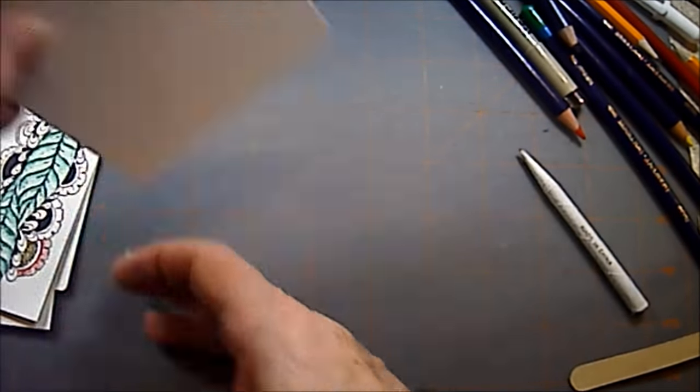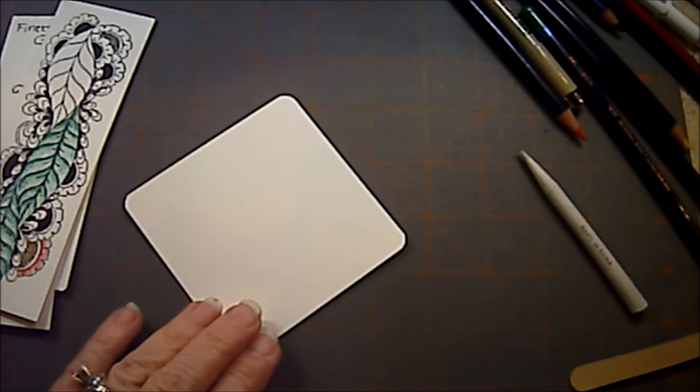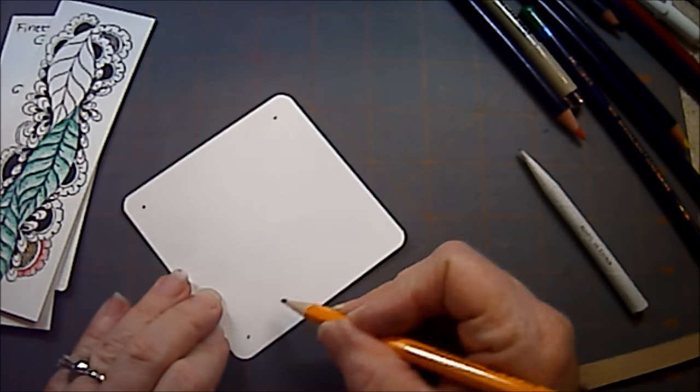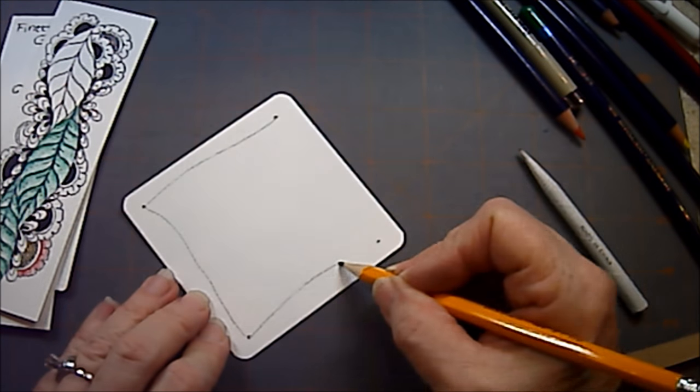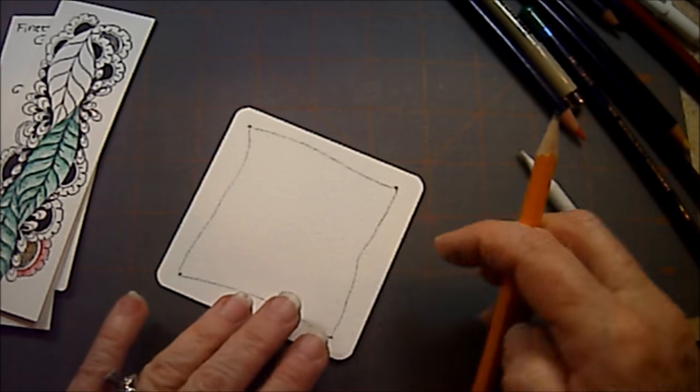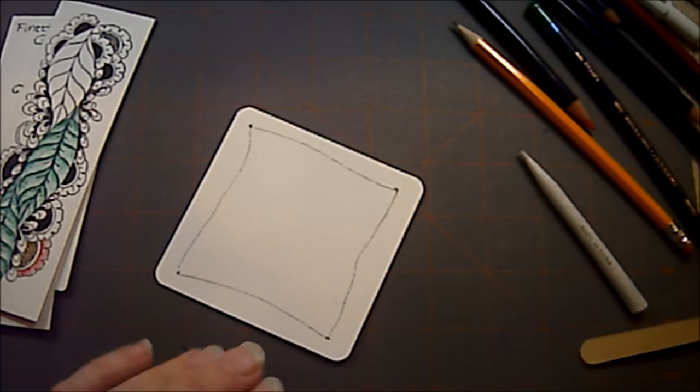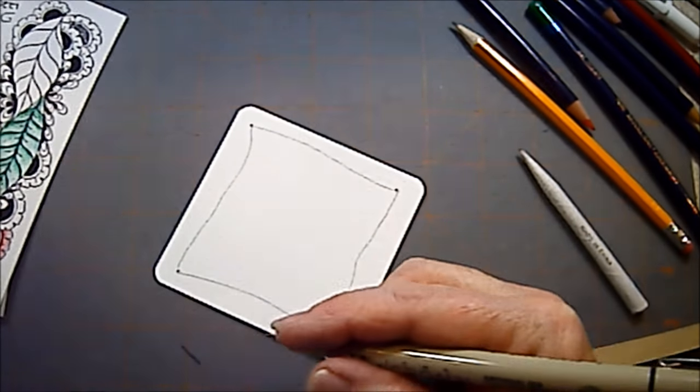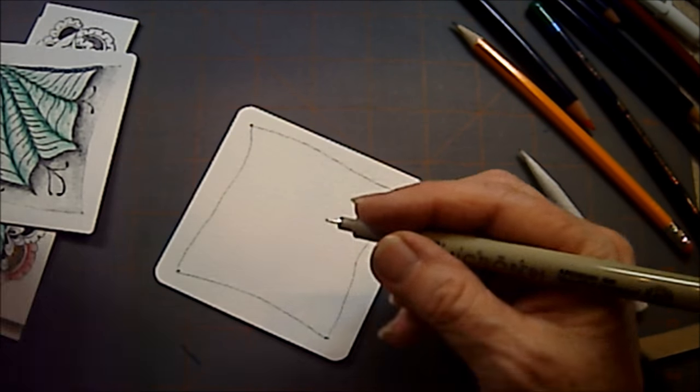I'm going to start out with a tile, a square tile, and I'm going to put my dots in the corner and my borders. We're just going to start without a string, and I'm just going to draw because I'm going to demonstrate this one right here, how we draw this one.